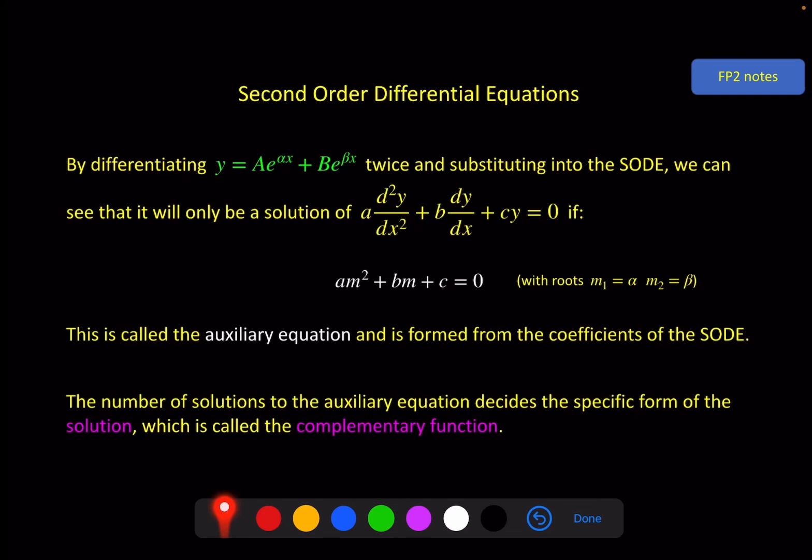A final note on this slide is that the solution to a homogeneous differential equation where it equals zero is called the complementary function. Now in this case that is the solution, that's it. But when we come to non-homogeneous differential equations we still need the complementary function. So we will still need to do this but it will only be part of the solution. That's why it's got a fancy name.